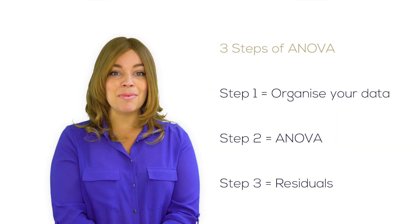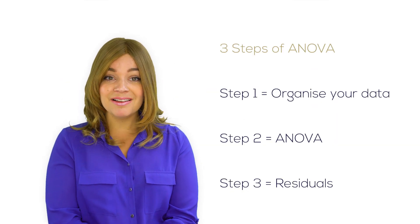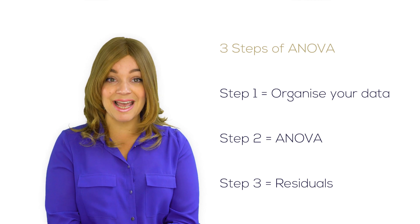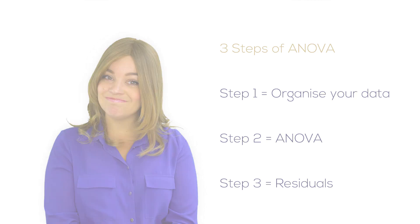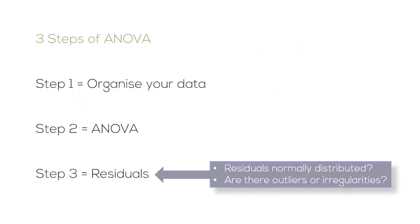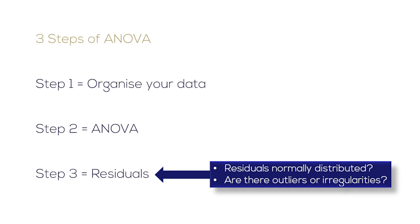As you probably remember, ANOVA consists of three steps in total. To validate the assumptions, we will check if the residuals are normally distributed and if there are any outliers or other irregularities present.